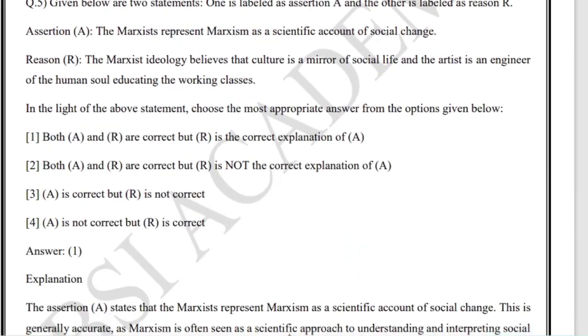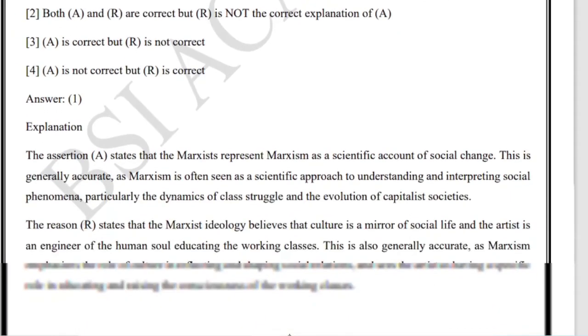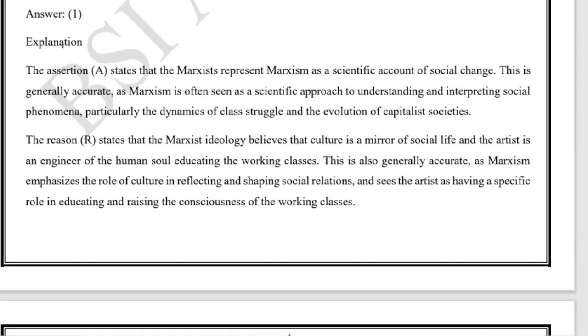Here are two statements - assertion and reason type questions require great knowledge of English literature. The assertion states that Marxists represent Marxism as a scientific account of social change. The reason states that Marxist ideology believes culture is a mirror of social life and the artist is an engineer of the human soul educating the working class. The answer is: both A and R are correct, and R is the correct explanation of A.